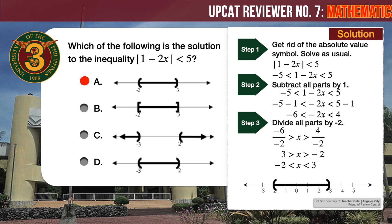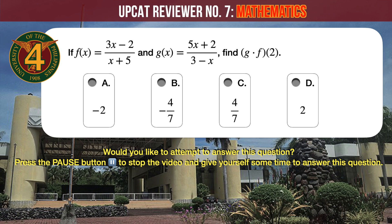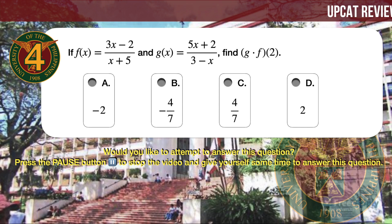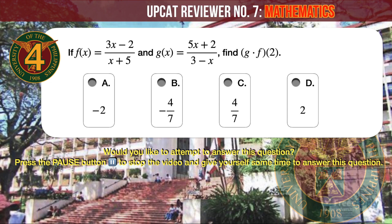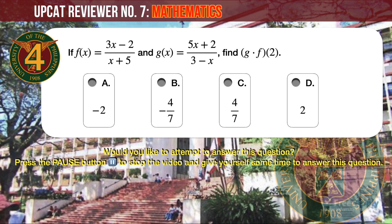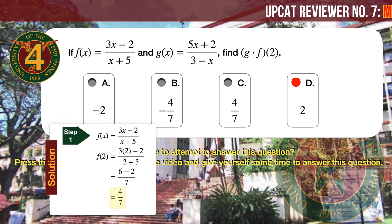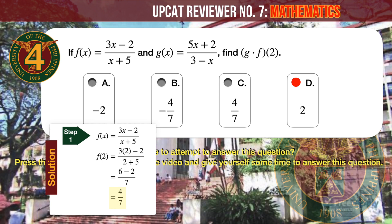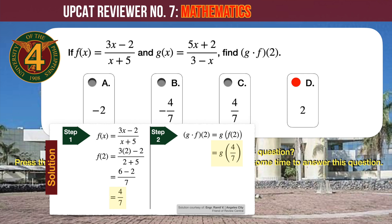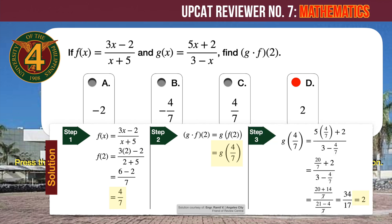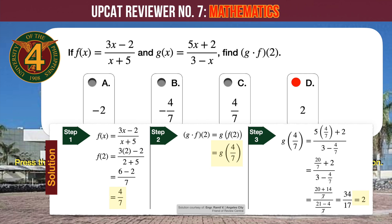Question number 4. If f(x) equals (3x minus 2) over (x plus 5) and g(x) equals (5x plus 2) over (3 minus x), find g times f of 2. A: minus 2. B: minus 4 over 7. C: 4 over 7. D: 2. The correct answer is D, which is 2. First substitute x equals 2 into f(x) to get f(2) equals 4 over 7. Since g times f of 2 equals g of f(2), we compute g(4/7) by substituting x equals 4 over 7 into g(x), arriving at 2 as the final answer.